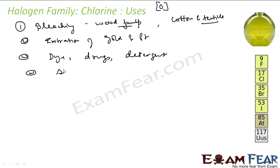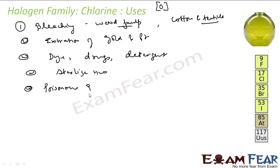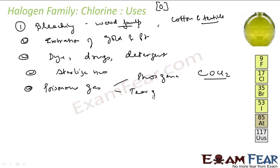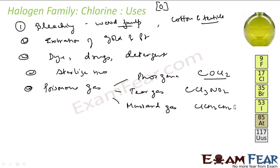Chlorine is also used to sterilize water. It is used to prepare poisonous gases — for example, phosgene (COCl2), tear gas (CCl3NO2), and mustard gas (ClCH2CH2SCH2CH2Cl). All these poisonous gases are prepared from chlorine.